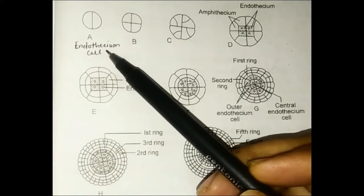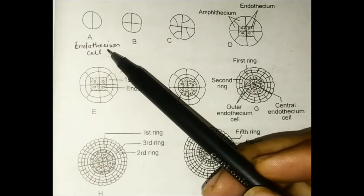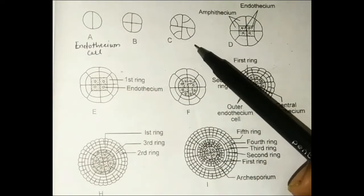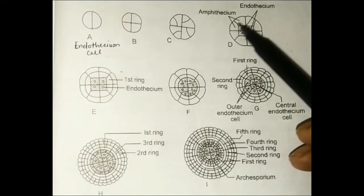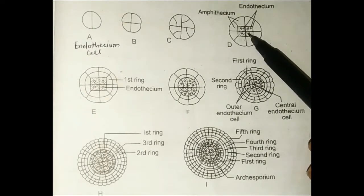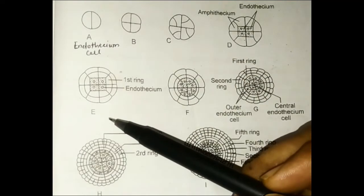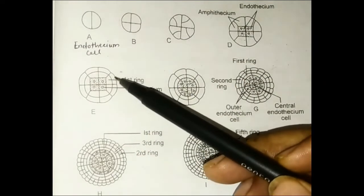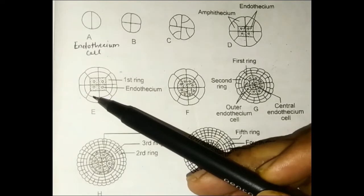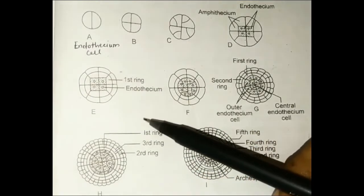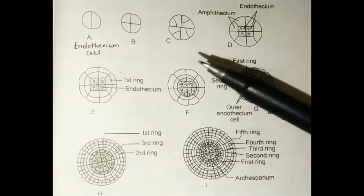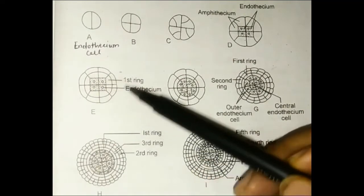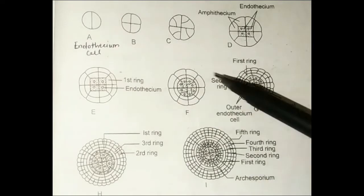Now we are going to study the development of the capsule. We have studied the endothesium cell — in that endothesium cell there are divisions and oblique divisions. The outer side has amphithesium cells and inside is the endothesium cell. Now there is the formation of rings. The first ring is formed by periclinal divisions.